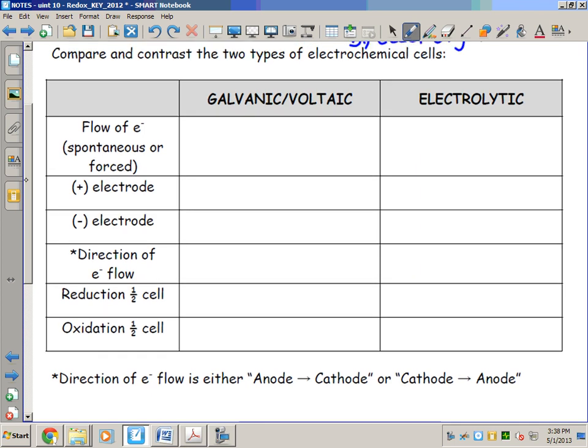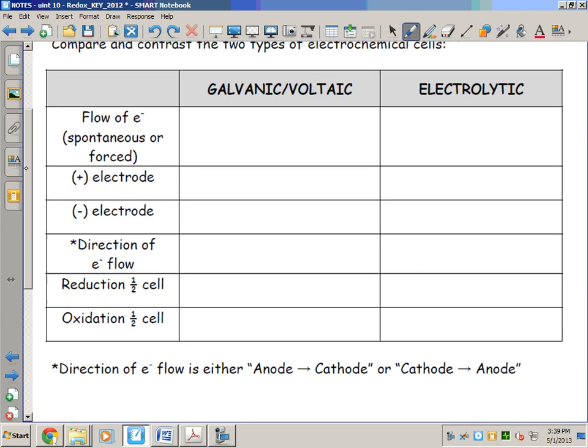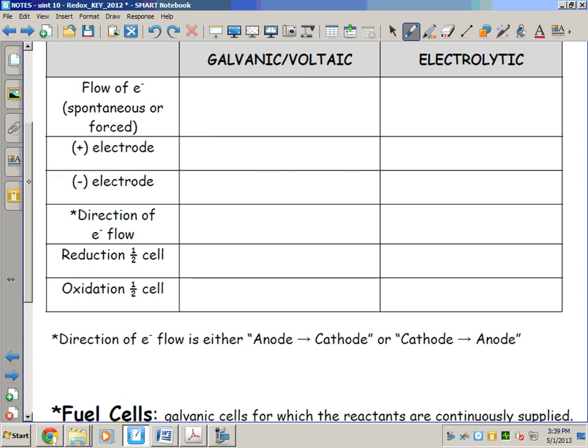Now in order to compare and contrast the two types of electrochemical cells, I actually want to move down to the bottom of this table first. I want to focus on the bottom three things that all go hand in hand, and if we can understand these then we'll have a better chance of understanding the top three.